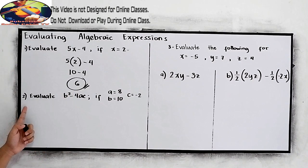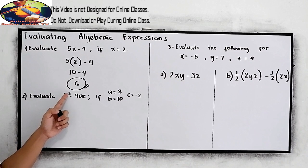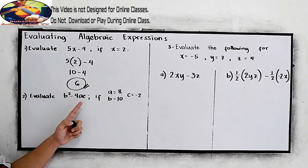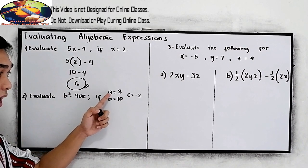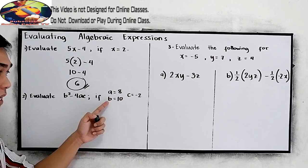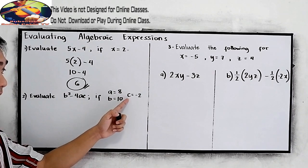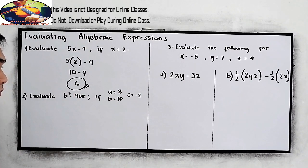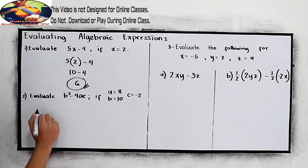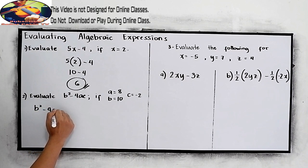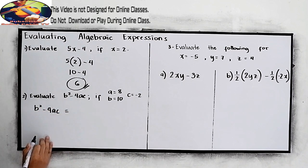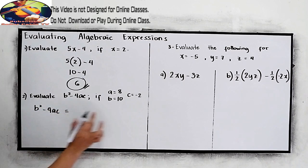Next, number 2, evaluate b squared minus 4ac if a is equal to 8, b is equal to 10, and c is equal to negative 2. So it's okay to copy the given expression, b squared minus 4ac. And now, let's substitute the given values.